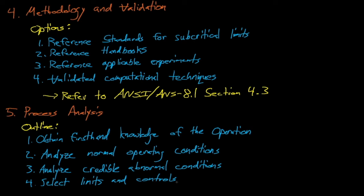The standard encourages us to use sound engineering judgment when selecting our controls, and this judgment is also how we should estimate what constitutes a credible upset condition. For example, if we anticipate an overmass upset, how much excess mass is the operation likely to see? Or if we lose moderation control and water mixes with fissile material, where is the water likely to intrude, and where is the resulting mixture likely to go? The standard cautions nuclear criticality safety engineers to not make judgments outside of their area of expertise, which is why it's important to rely on knowledgeable experts and collaborate with operations personnel when quantifying credible upset conditions. Operations staff are a valuable resource, and we should never see each other as the enemy.